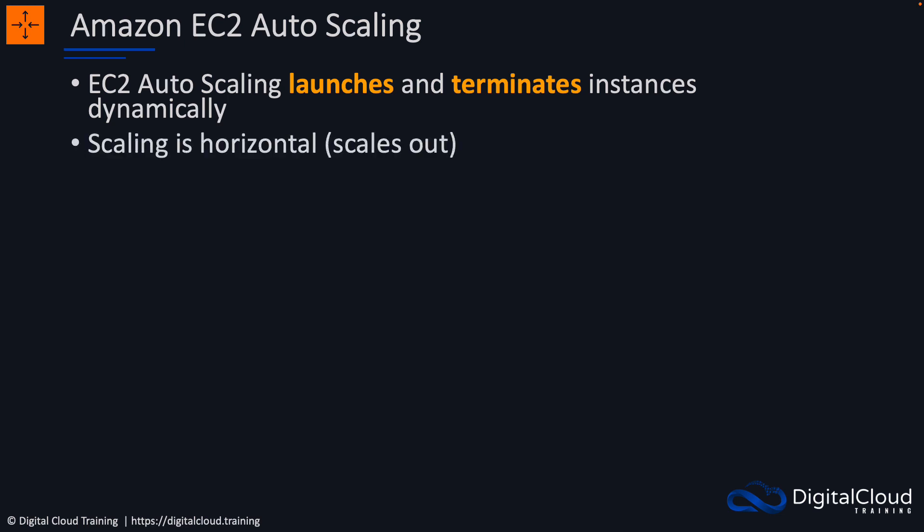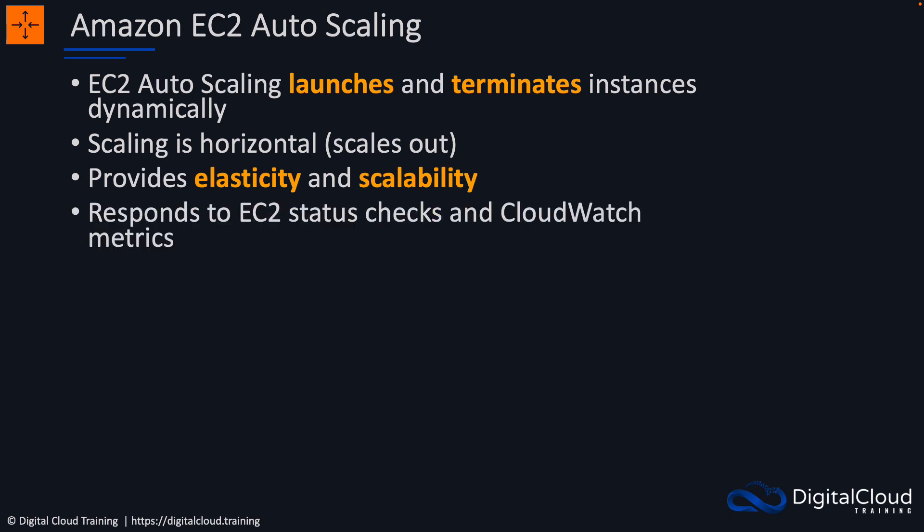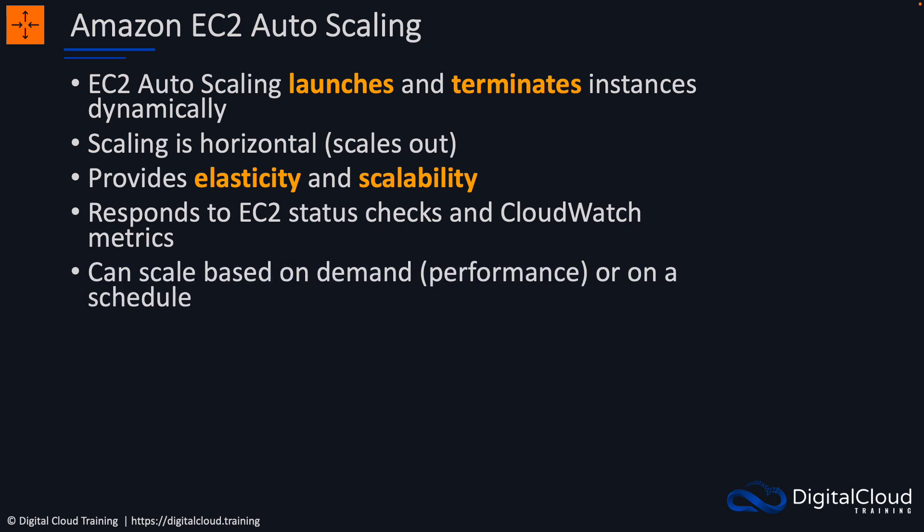Auto scaling launches or terminates instances for us dynamically. Scaling in this case is horizontal — scaling out — and it provides elasticity and scalability. Elastically means it has the ability to expand outwards and then back in again. When resources become less utilized, instances can be terminated, making us more cost effective. It also responds to EC2 status checks and CloudWatch metrics, and can scale based on demand or on a schedule — so it's not just about performance metrics, you could define a specific time when you know you'll need more capacity.